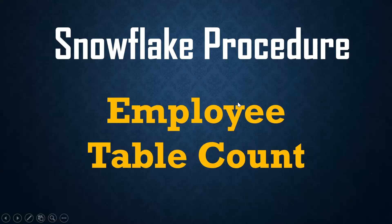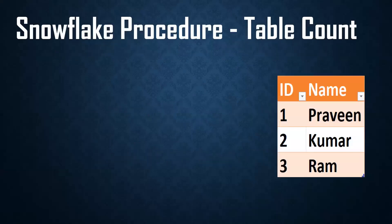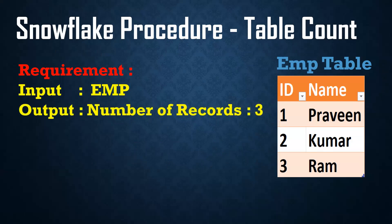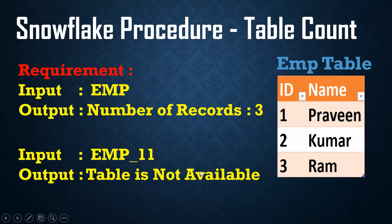The requirement is: I have an employee table with three records. I am passing an employee table name as input and I need to get the number of records. If I pass a table which is not there, we should get 'table is not available'. So today's requirement: pass the table name as the input parameter — if the table already exists, we should get number of records; if table is not there, we should say 'table is not available'.